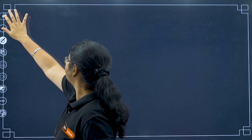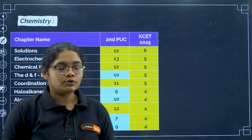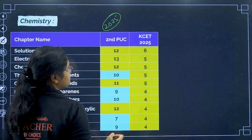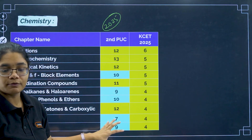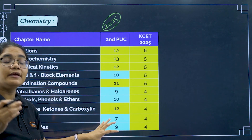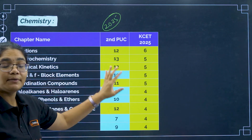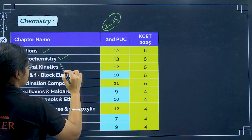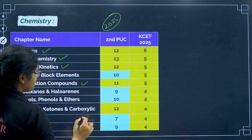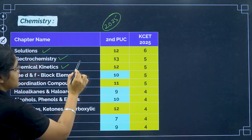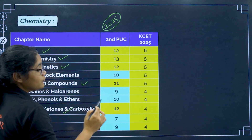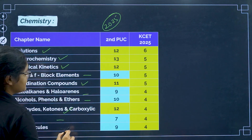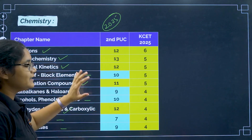Now let me show you the final weightage according to KCT 2025. The high weightage PU2 chapters are: solutions, electrochemistry, chemical kinetics, coordination compounds, and aldehydes/ketones/carboxylic acids — with 11 to 13 marks being asked from these. D and F block, haloalkanes and haloarenes, alcohols, amines, and biomolecules are slightly less important.